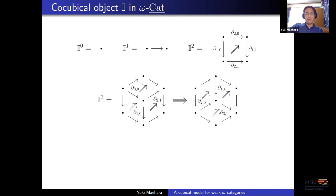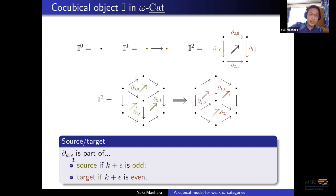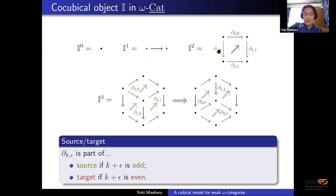I-n is supposed to look like the n-cube, where in the middle we have an n cell pointing from somewhere to somewhere. The rule is: if you have a (k, epsilon) face, then it is supposed to be part of the source if k plus epsilon is odd, and part of the target if k plus epsilon is even. You can find this parity-based idea in parity complexes and other papers, including the Al-Agl–Brown–Steiner paper. So here, one plus zero is one, which is odd, so this is part of the source.